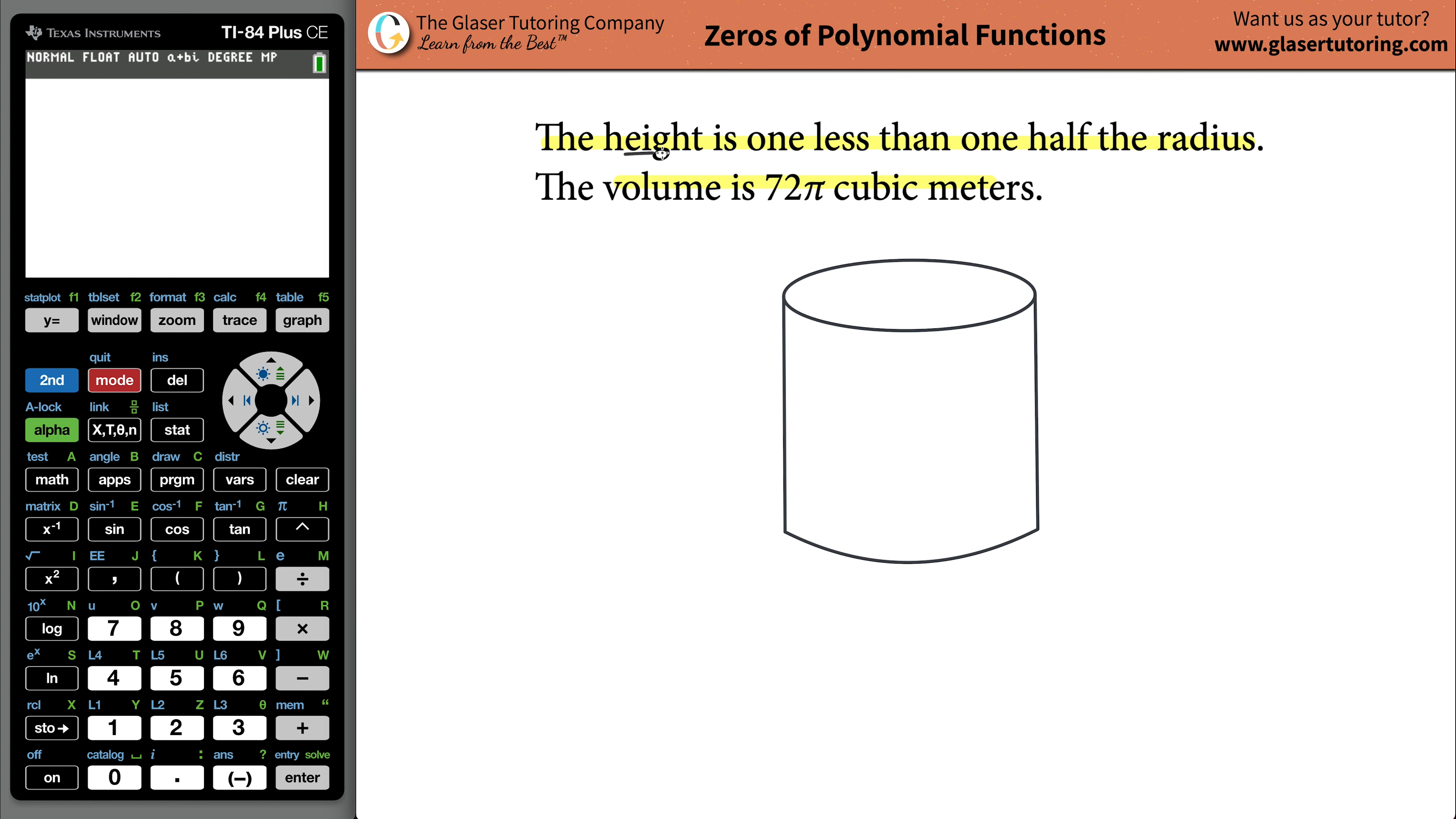So it says the height is one less than, well, one what - one millimeter, one micrometer? First of all, that's a problem. It should be one meter, right? Because I have to make that assumption. If this is in cubic meters, I'm assuming that they're talking about meters. Let's just say the height is going to be one meter less than one half of the radius.